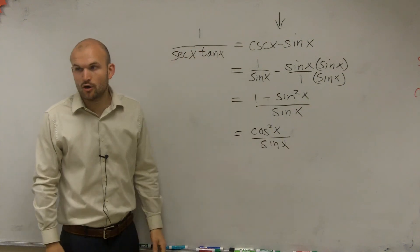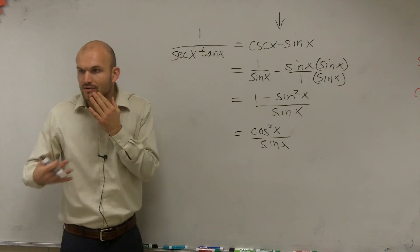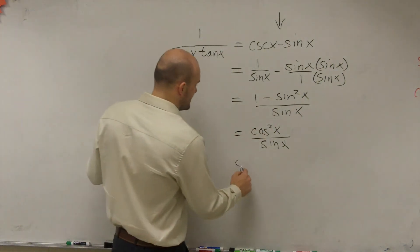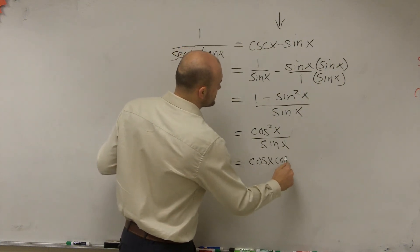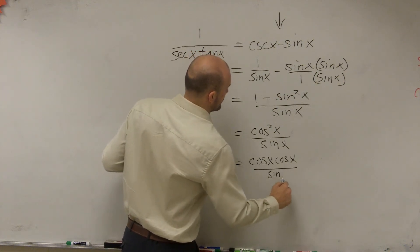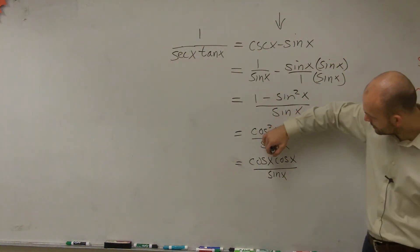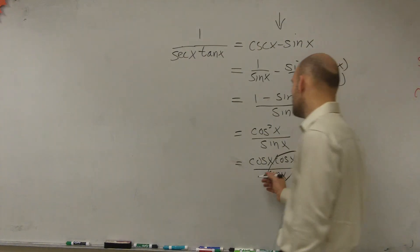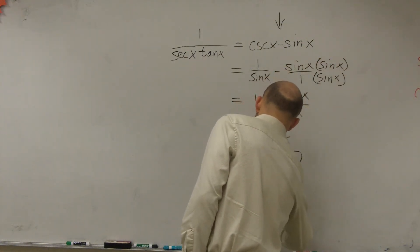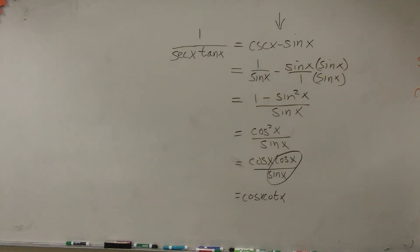Now, that is not 1 over secant of x times tangent of x. So I need to keep on looking and see how can I keep on rewriting this. Well, cosine squared equals cosine of x times cosine of x over sine of x. And therefore, I could probably group one of these. And you could say that this could be written as cosine times cotangent. So you could write that as cosine of x times cotangent of x.